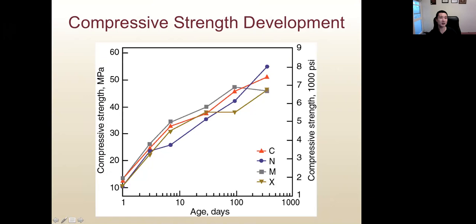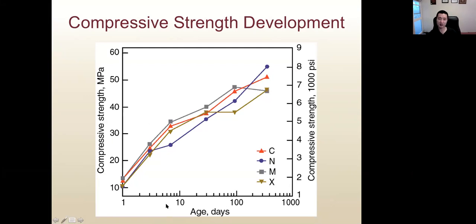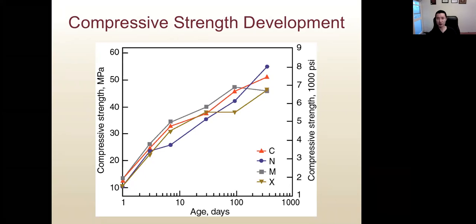This slide shows how compressive strength of concrete is affected by superplasticizer. The red line represents the control mix with no superplasticizer, while the other mixes use different types of superplasticizer. Generally speaking, if the water-to-cement ratio does not change, the strength should not change significantly.